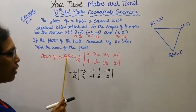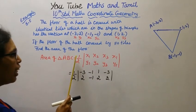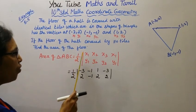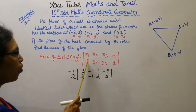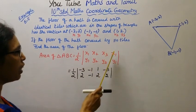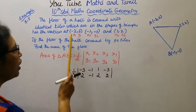First, area of the triangle ABC. Formula: half, x1, y1, x2, y2, x3, y3, x1, y1.